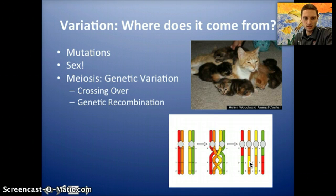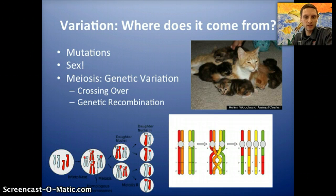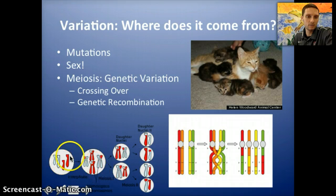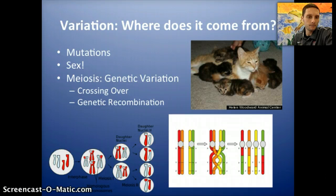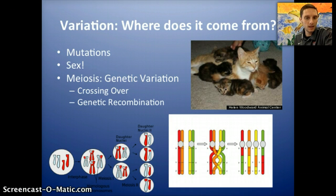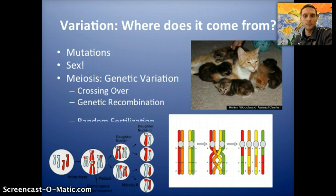Genetic recombination is a second way that variation can happen. This is simply looking at the fact that how chromosomes separate during meiosis is random. In this example, we're looking at just a very simple organism with two different chromosome lengths. In humans, we have 23 chromosome pairs, and the way that these can separate to form sex cells — sperm and egg — is going to be different every time. There are millions of different combinations of how those chromosomes can separate out into sperm and egg.